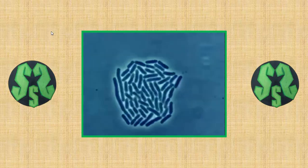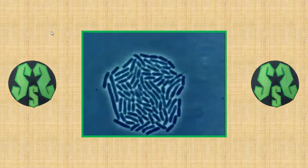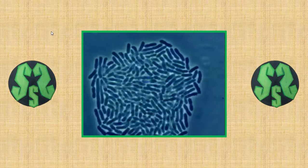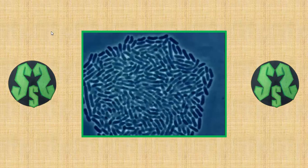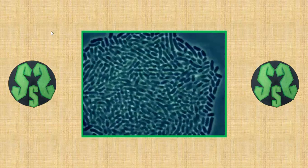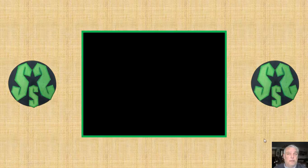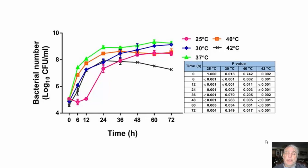Bacteria reproduce very simply and rapidly by doubling their contents and splitting in two. Just one bacterium dividing every 20 minutes could produce nearly 5,000 billion billion bacteria in one day. That's a lot of bacteria! Here's a graph showing why having a refrigerator is so important.